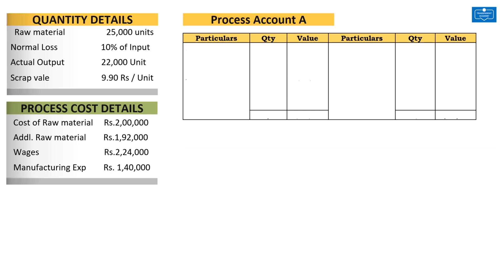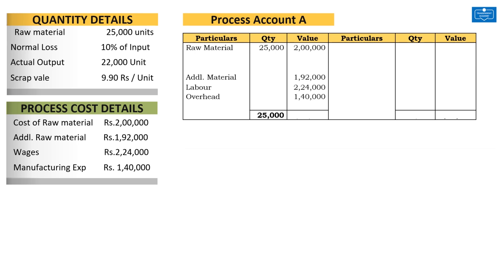Shall we start? The first entry in the Process A account is the basic raw material, and the quantity is 25,000 units — that is our input. Apart from that, we are also introducing additional raw material, spending on wages, and incurring overheads. The values are Rs. 1,92,000, Rs. 2,24,000, and overheads Rs. 1,40,000. The gross total cost of the process is Rs. 7,56,000.